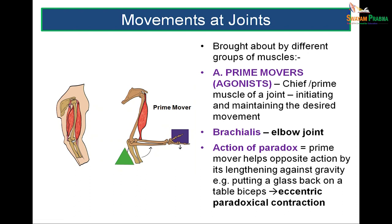When discussing movements at any joint, groups of muscles act together. Prime movers (agonists) are the chief muscles that initiate and maintain a movement — like the brachialis at the elbow joint. There is also an action of paradox, where a prime mover helps in the opposite action: for example, picking up a block is a prime mover action, but putting it back on the table uses eccentric paradoxical contraction of the prime mover.